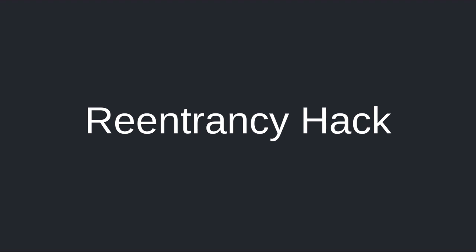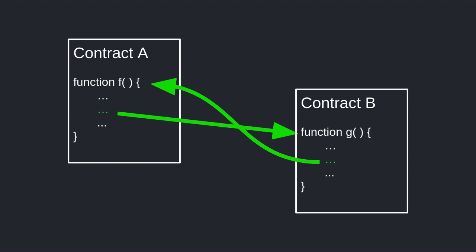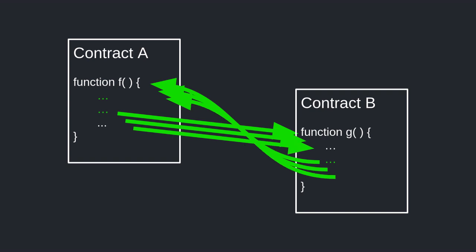First let's talk about what a re-entrancy hack is. Imagine there are two contracts: contract A and contract B. A function F inside contract A is called. Inside the function it calls a function inside contract B, and contract B calls back into function F. Function F inside contract A starts executing its code before the previous call to the function completes — it calls function G in contract B again, and function G calls back into function F. This can continue indefinitely. Using this hack millions of dollars were stolen. In a future video I'll go over this in more detail.